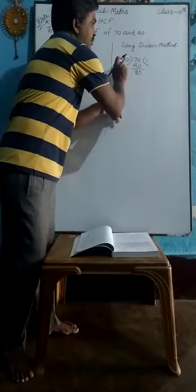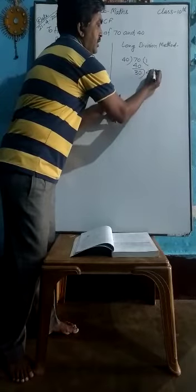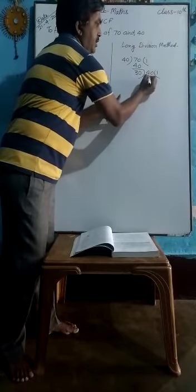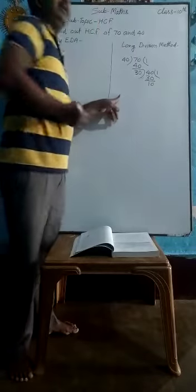Then again divide 40 by this remainder 30. 30 goes into 40 one time, and you will get remainder as 10.